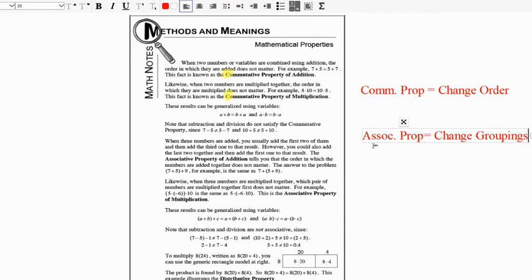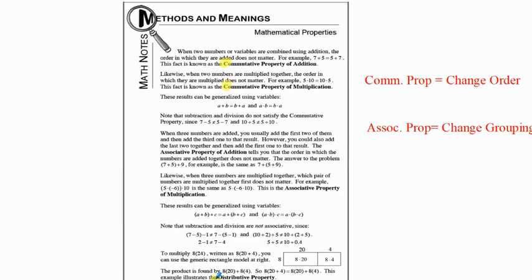Both the commutative property and the associative property only work with addition and multiplication. Lastly, they remind you of the distributive property, which we worked with already some before. One way that we worked with it was the generic rectangle, where we take what's been multiplied by the outside times the components — the numbers or variables that are inside the parentheses.